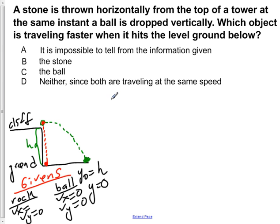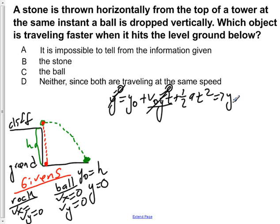If we set up the equation y = y₀ + Vy·t + ½at², we can cancel out y because that's zero. We can cancel out this term because Vy equals zero as well. We're now left with y₀ + ½at² = 0.